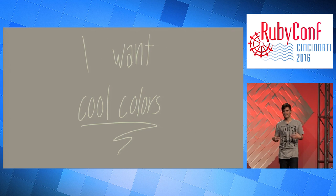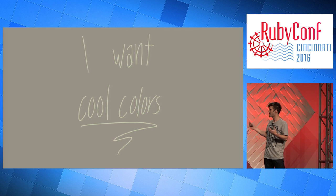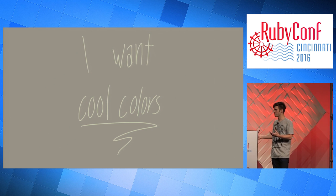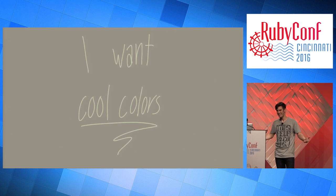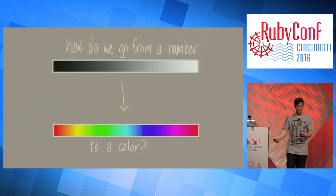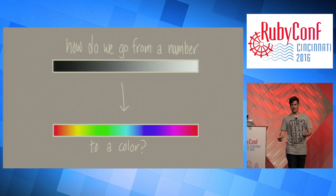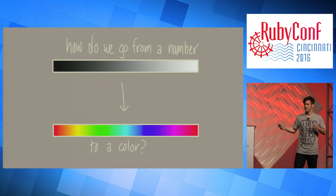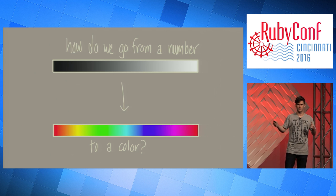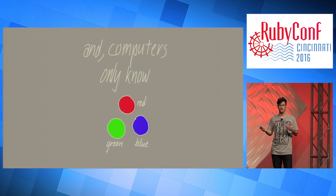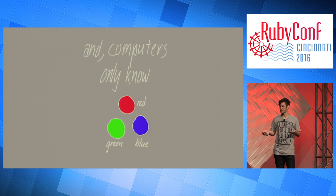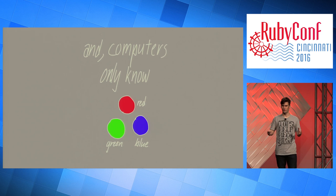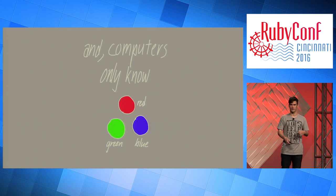That's great and all, but I want cool colors. The entire point of what I'm doing is I just want pretty pictures. So let's make that happen. How do we even go from a simple brightness number all the way up to a full color in the spectrum? And computers only really know red, green, and blue anyway.